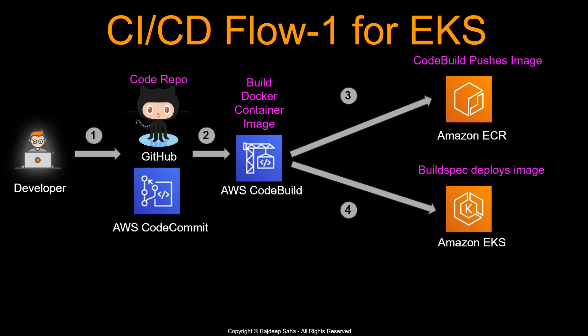Let's start CI/CD Flow 1 for EKS from the beginning. You, the developer, check your application code into a code repository — I'm showing GitHub and AWS CodeCommit, but Bitbucket or any other supported repository works as well. Next, CodeBuild is automatically triggered as soon as you check in new code, and everything in CodeBuild is determined by a file called buildspec.